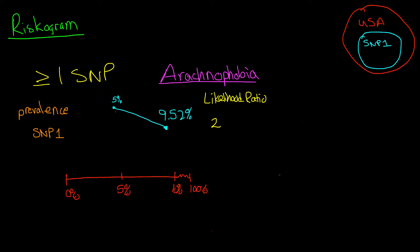So now let's look at a couple of other SNPs. SNP2 and SNP3. I'm just going to make up some likelihood ratios for these. SNP2 is 3.2 and SNP3 is 0.4.